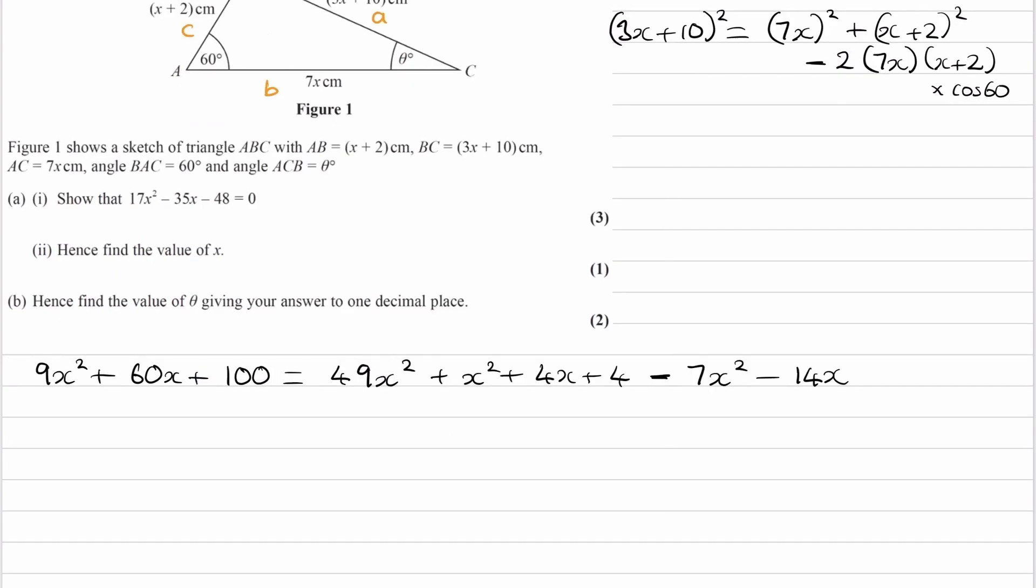So let's just simplify both sides. So 9x squared plus 60x plus 100. The right-hand side, we can write as, so these three combine to give 43x squared. Those two combine to give minus 10x.